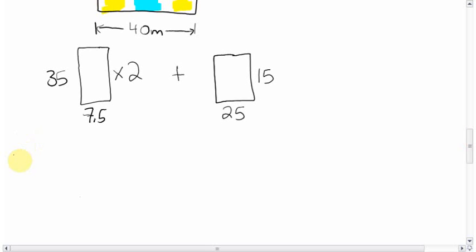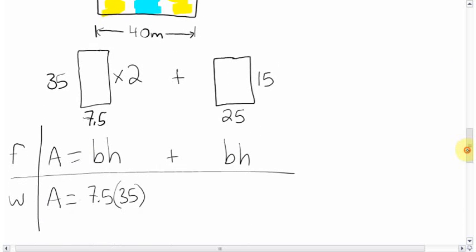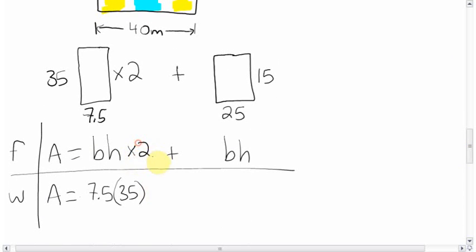We can do our formula work answer. So our formula is area equals, we're talking about a rectangle, so it's base times height, plus another rectangle, base times height. Our work: area we don't know. The base here is 7.5, and the height is 35. Now let's not forget, we have to times this by 2, because there's two of those, the two yellow rectangles. So we have to take that into account. So I should put times 2 here, and whatever answer we get, we'll times that by 2. We'll add that to the base of this, which is 25, the height, which is 15.